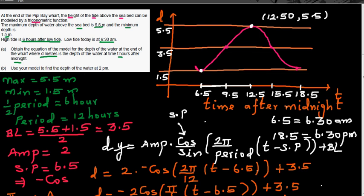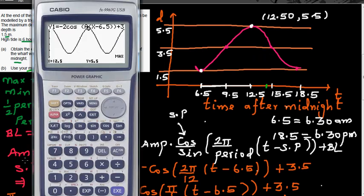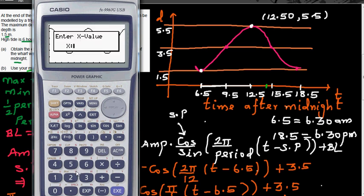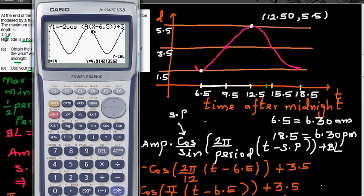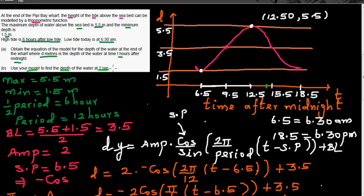Now use the model to find the depth at 2 pm. Two pm is 14 hours after midnight, so enter t = 14 (not 2). Using G-Solve to find y when x = 14 gives 4.91. So the depth of water at 2 pm is approximately 4.91 meters.